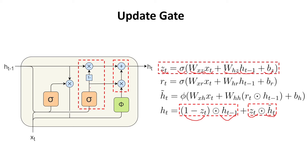This mechanism can also be observed in the diagram. Where we have sigma, we compute Zt, then take this value and multiply it element-wise with the output from the phi symbol, which is the candidate hidden state h̃t. On the other side, we compute 1 minus Zt and multiply it element-wise with the previous hidden state Ht-1. In the end, we add these two values to obtain the new hidden state.